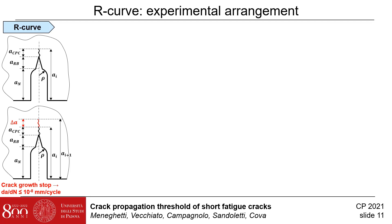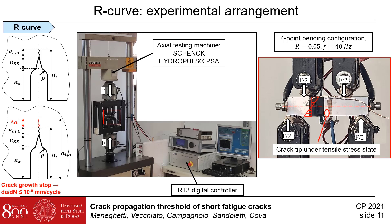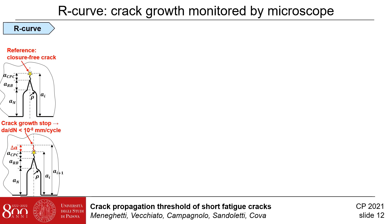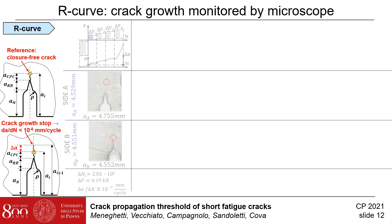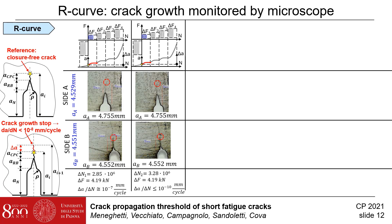After that, the R-curve test to derive the R-curve has been started using the same testing machine and loading fixture. The specimen has been oriented so that the crack tip is under a tensile stress state with a load ratio of 0.05. The crack growth has been monitored by both digital microscope and the direct current potential drop technique through the MATLECT DCM2 device. The test has been started with a load range of 4.19 kN, and after 2.85 million cycles, the crack propagated at site A by 0.2 mm, while at site B no propagation was observed. After other 3.28 million cycles, the crack does not show further propagation, therefore the crack has stopped.